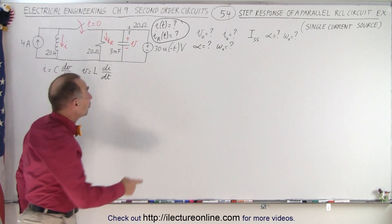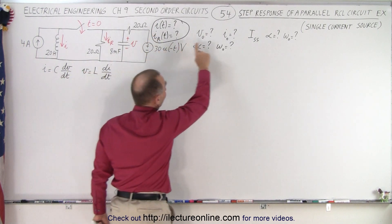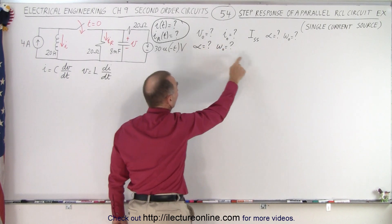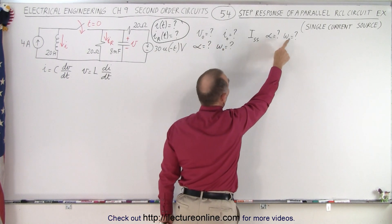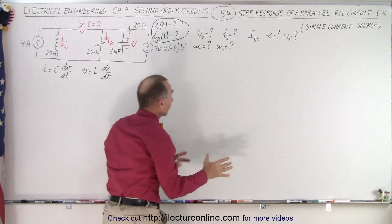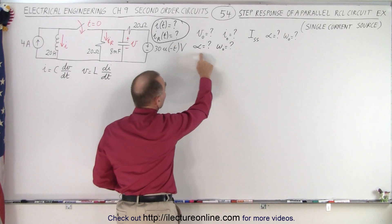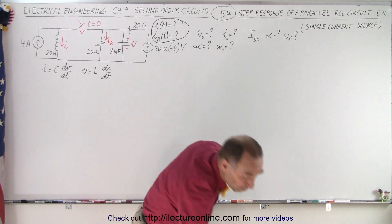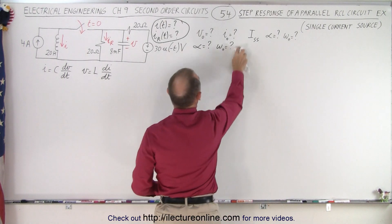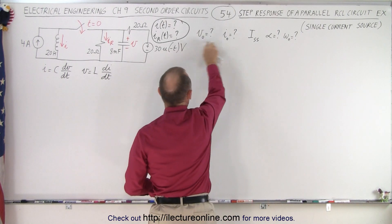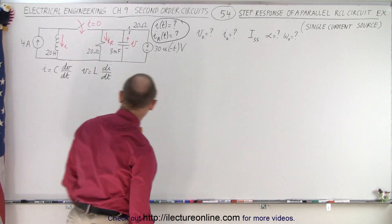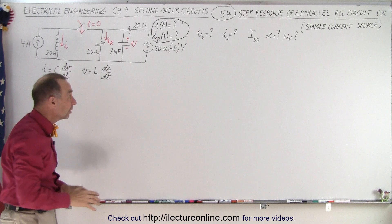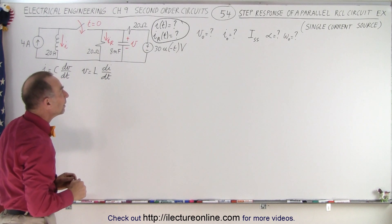Even though we're looking for the current, we know we have to solve for all these other things: the initial voltage, the initial current, the steady state current, alpha, and omega sub-naught, which is the natural frequency of the circuit. We also probably need these two equations right here — at least one of them, maybe both. So we keep those equations handy.